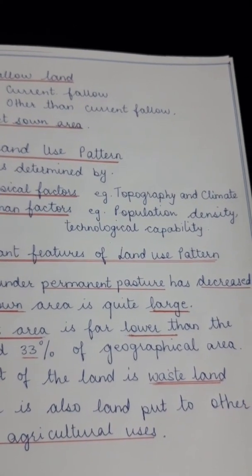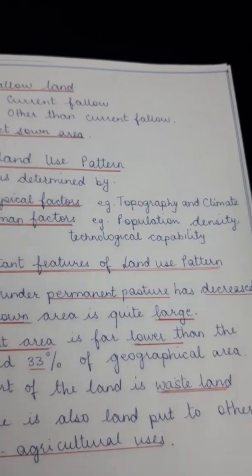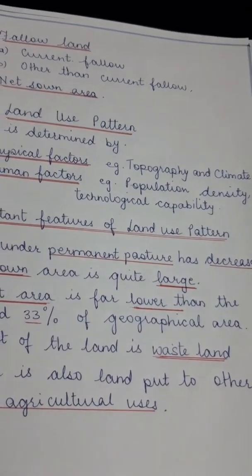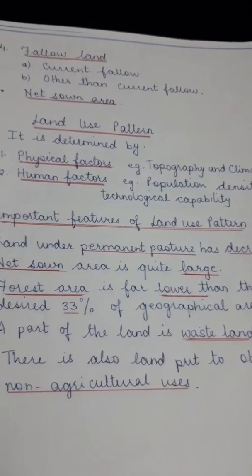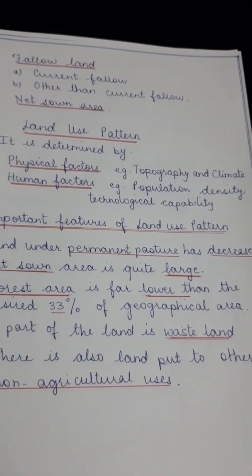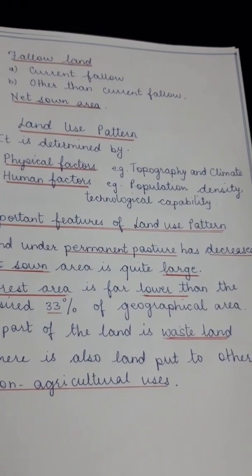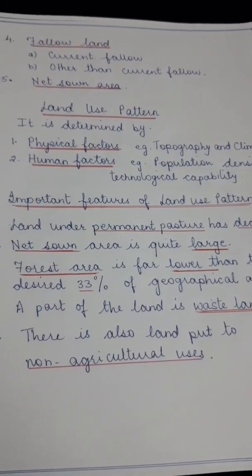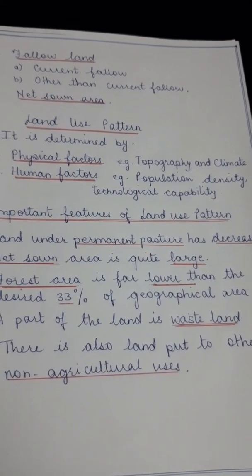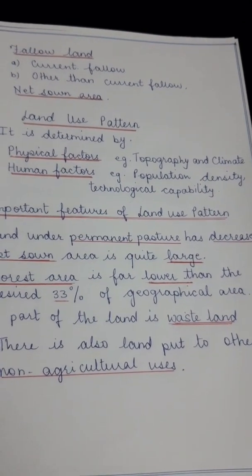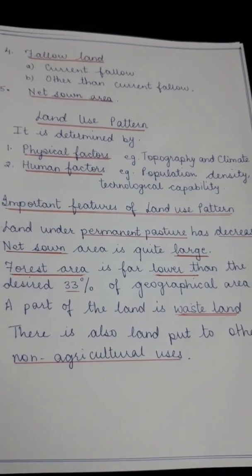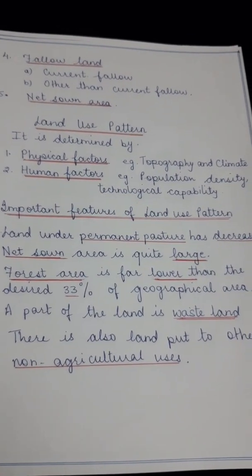If the land is level and the climate is suitable, then land is very suitable for agriculture. Human factors include population density and technological capabilities. If the technological capability is good and the population density is also suitable, then industries etc. can be set up.